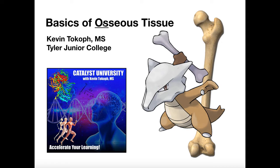For example, if we talk about ossification or ossifying, that's a process by which we convert something into bone. Normally that something is cartilage, and we'll actually see that in later videos. We'll briefly mention it today as it relates to the parts of a long bone. Or we can have cells called osteoblasts and osteoclasts — we'll talk about those in a couple of videos.